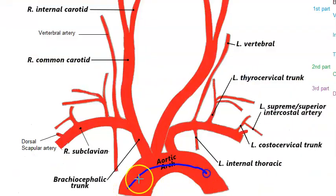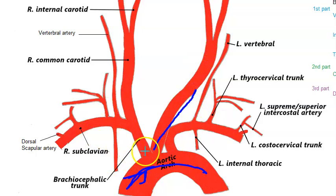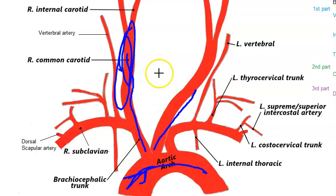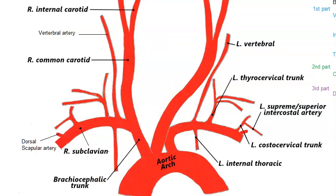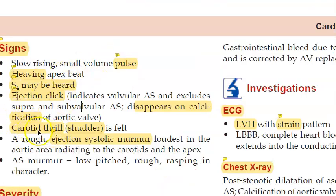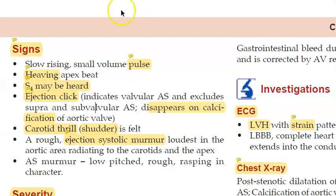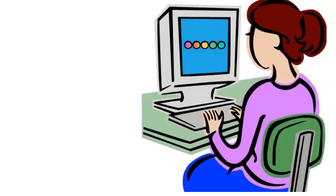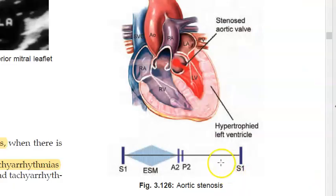Looking at the aorta, the common carotid arises from it. A carotid thrill or carotid shudder is seen in aortic stenosis. Whenever they mention carotid thrill or shudder, you should associate it with aortic stenosis. This is followed by an audio demonstration of normal heart sounds versus aortic stenosis heart sounds.